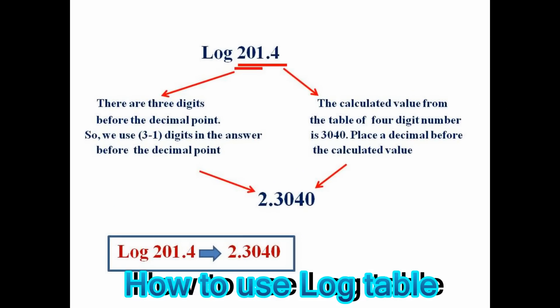The next example is log 201.4. The calculated value from the table for the 4-digit number is 3040. Place a decimal point before the calculated value to get 0.3040. From the question, it is clear that there are 3 digits before the decimal point. In the answer, we only use 3 minus 1 digits. Then the answer becomes 2.3040.